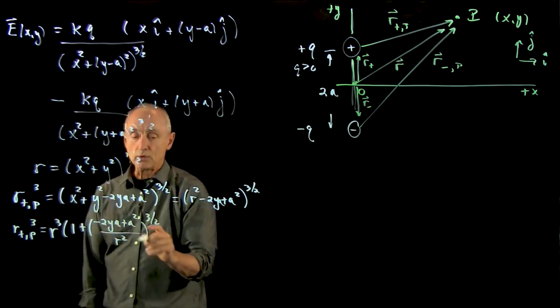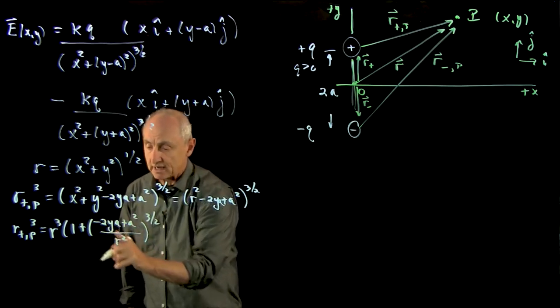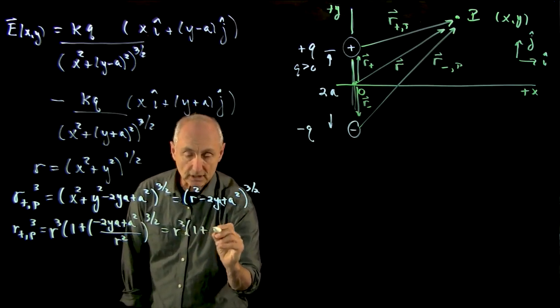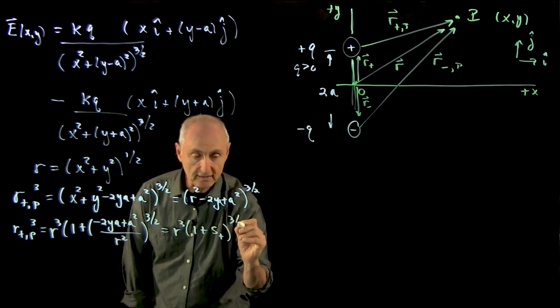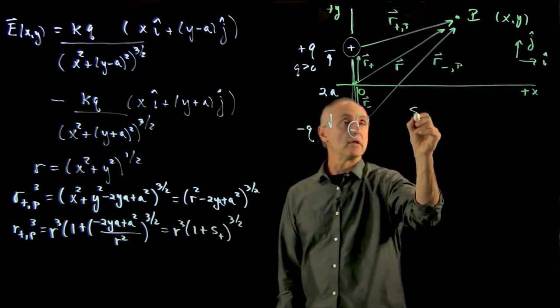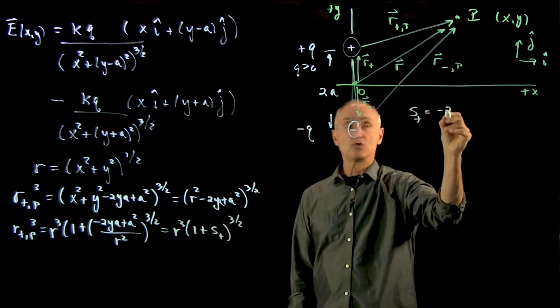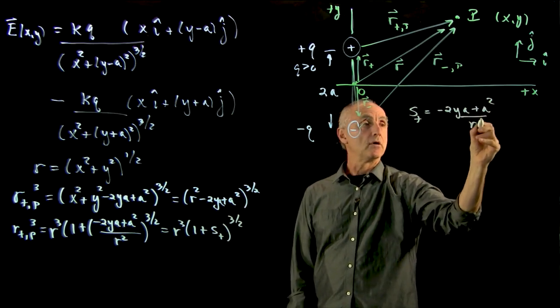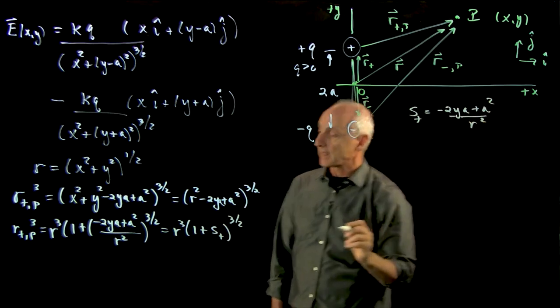Now what I'd like to do is, this is a complicated term. I'd just like to indicate it as 1 plus s_plus to the 3 halves, where s_plus is equal to minus 2ya plus a squared over r squared.